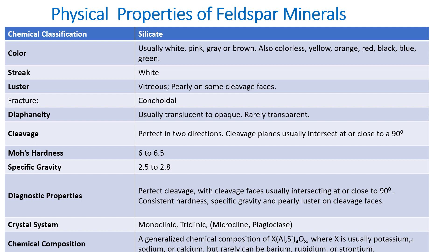The cleavage is perfect in two directions, with cleavage planes intersecting at 90 degrees. According to the Mohs scale of hardness they have 6 to 6.5, and specific gravity 2.5 to 2.8. The diagnostic properties include perfect cleavage with cleavage faces intersecting at right angles (90 degrees), hardness of 6 to 6.5, specific gravity, and pearly luster on cleavage faces — all important for identifying the feldspar group of minerals.